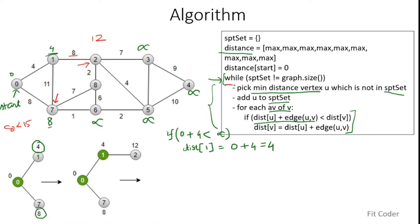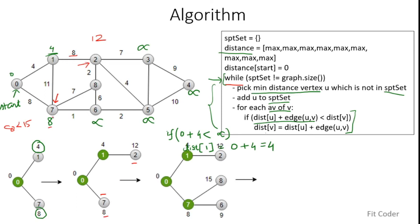We again enter the while loop. We need to pick the minimum distance vertex not in the SPT set. Out of nodes 7 and 2, the minimum distance is node 7 with distance 8, and we add it to the SPT set. We compute the distances of its neighbors 6 and 8. Distance of 8 becomes 8 plus 7 equals 15, and distance of 6 becomes 9. Both are added to the SPT set, shown in green. In the next iteration we pick the node with minimum distance among the unexplored nodes, which is node 6 with distance 9.